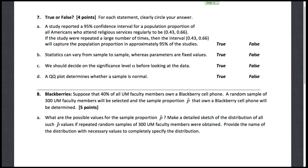First, part A: a study reported that a 95% confidence interval for a population proportion of all Americans who attend religious services regularly to be 0.43 to 0.66. If the study repeated a large number of times, then the interval will capture the population proportion approximately 95% of the studies.